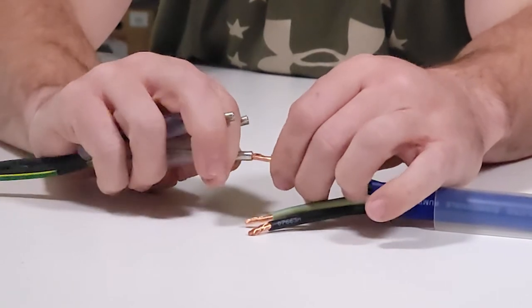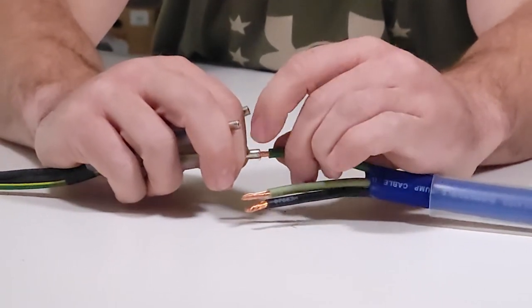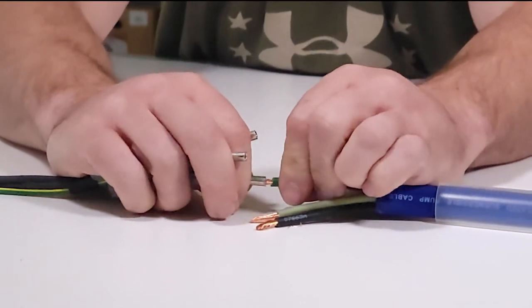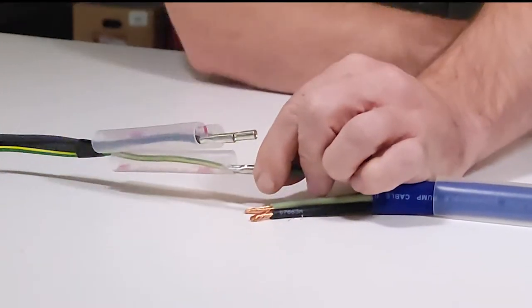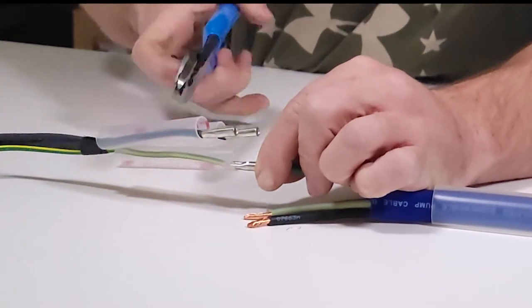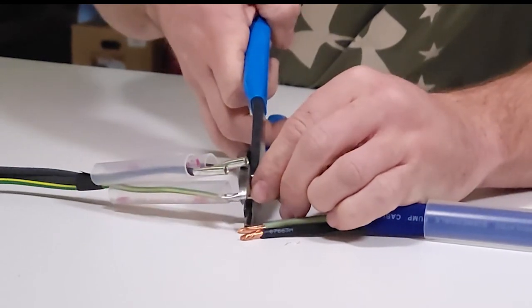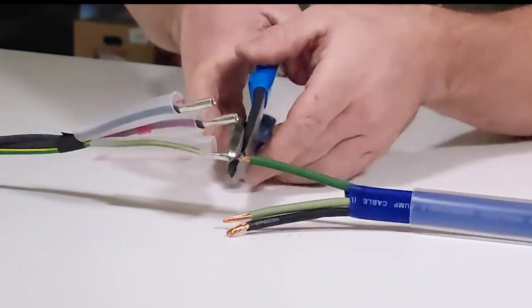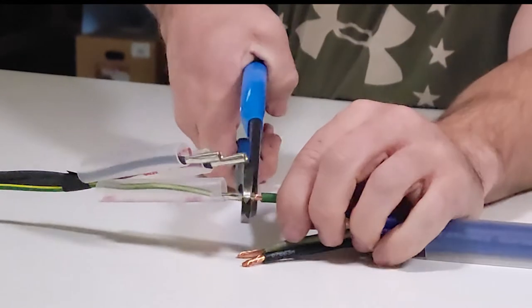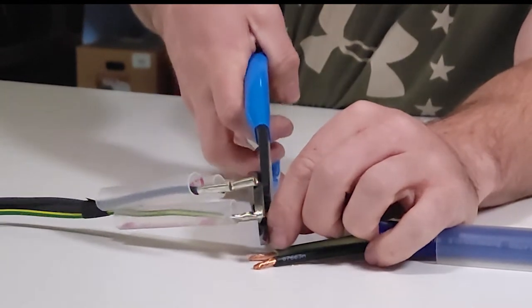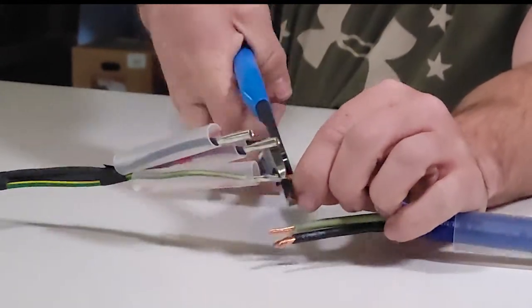Finish crimping the splicers to each wire, starting with green to green. Insert the copper all the way in and crimp downward with the notched side facing up. It is okay if a few strands slip outside of the splice.